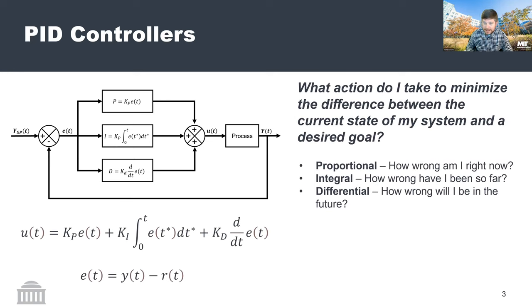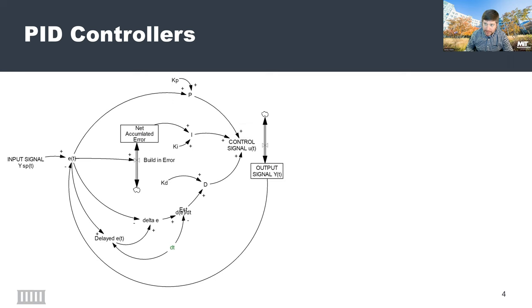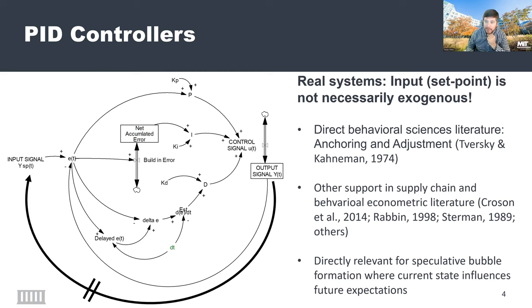When I say PID controller, I'm referring to this idea that you take some state of your world and compare it to a set point — some goal — and use the difference between those two to construct an input that updates your process, hopefully closing the gap between the state of the world as you see it versus as you would like it to be. We can take this classic block diagram version of a PID controller, which has some degree of feedback, and translate it into a compartmental model. One thing interesting is that in real systems, the input is not necessarily exogenous.